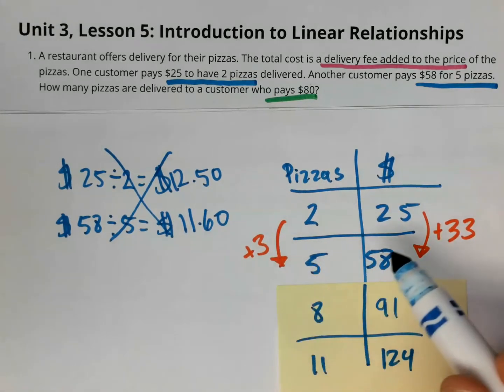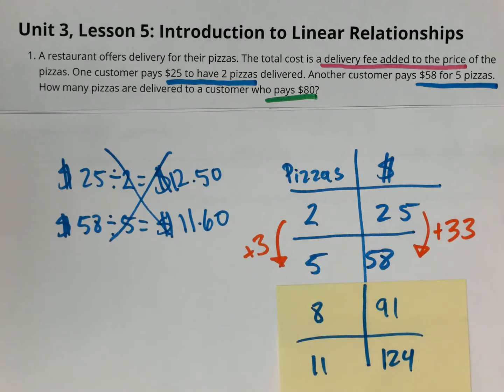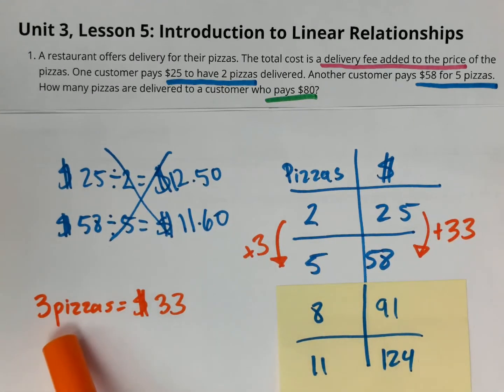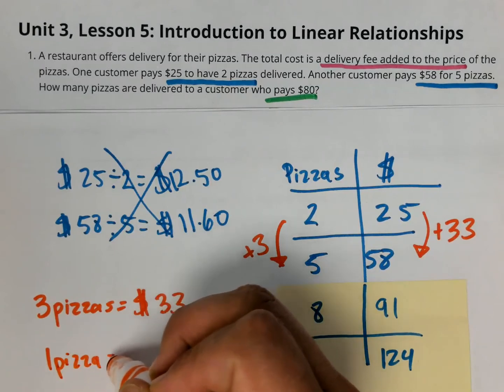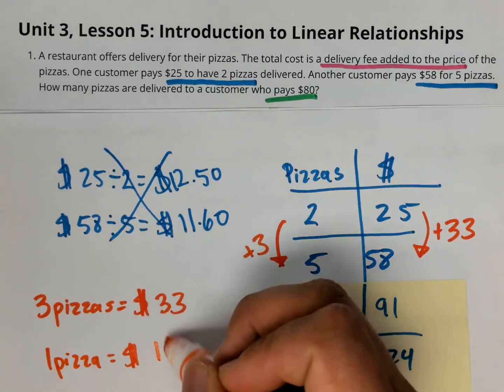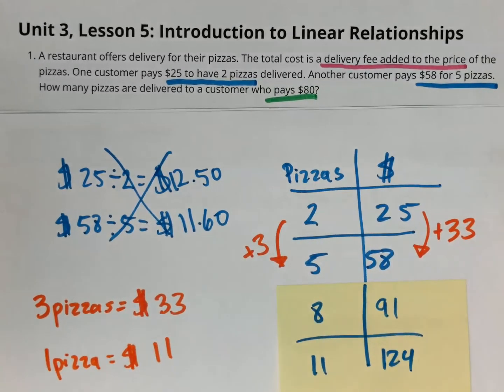So what I want to do is take these numbers here in the orange and calculate what it is for one pizza. So I know $33 is three pizzas. I can divide this out both by three and I get one pizza is $11. Now this is not including the delivery fee. So the numbers that are written in orange are not including the delivery fee.